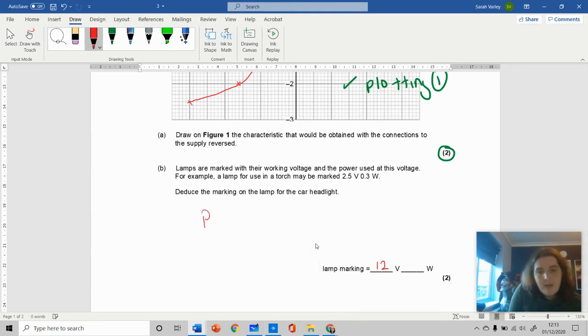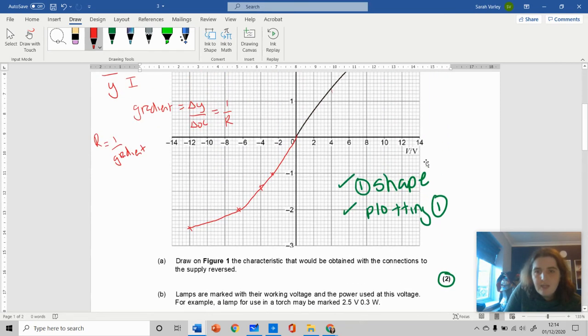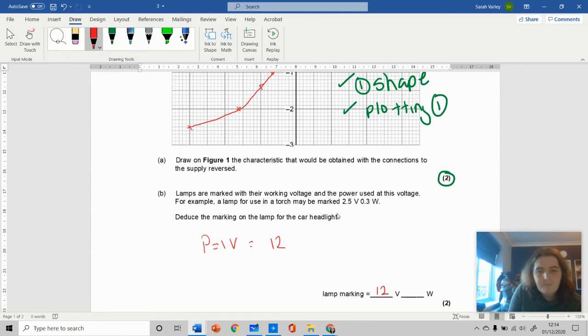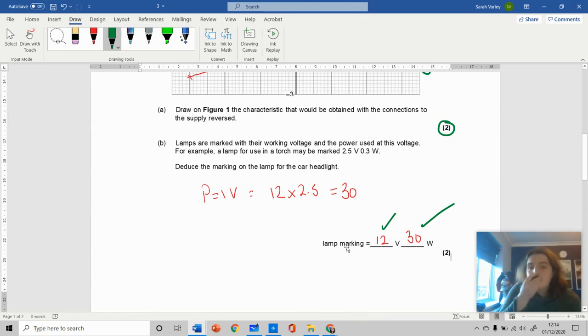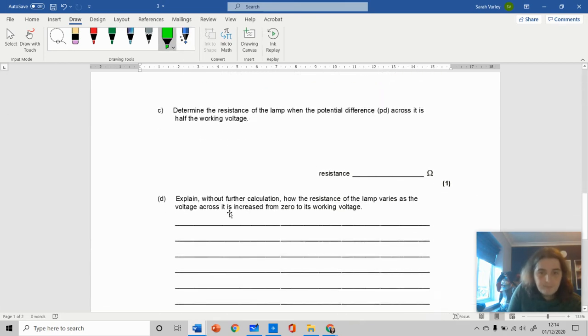It wants power, so remember power equals IV. My working voltage is 12 volts and my working current is 2.5 amps, which equals 30 watts. That's a mark for the voltage and a mark for the power.